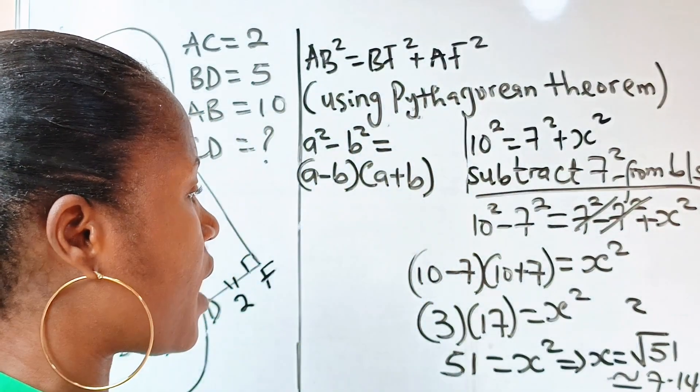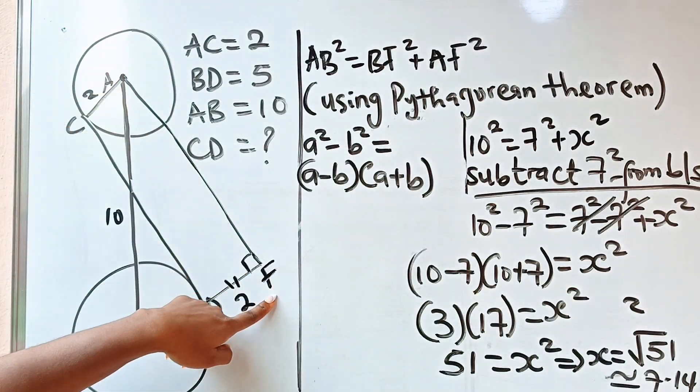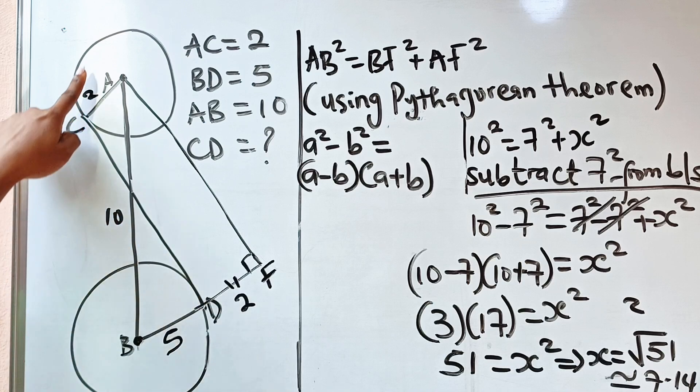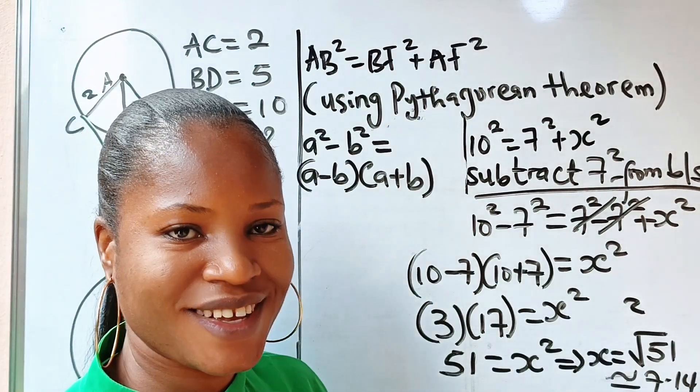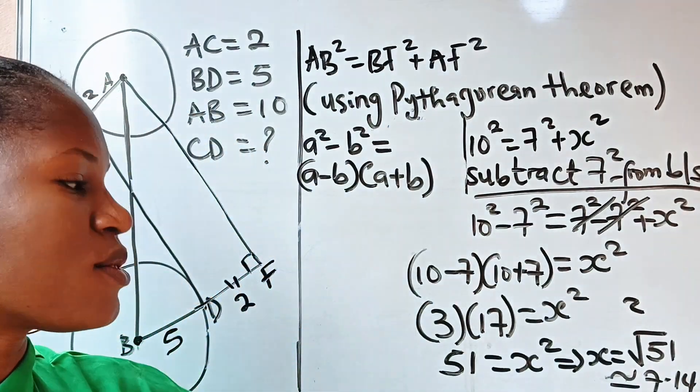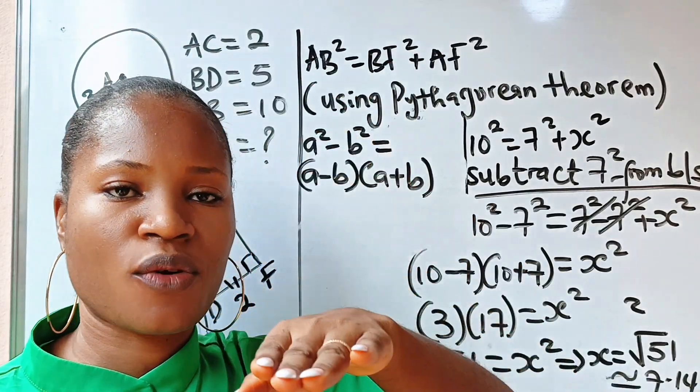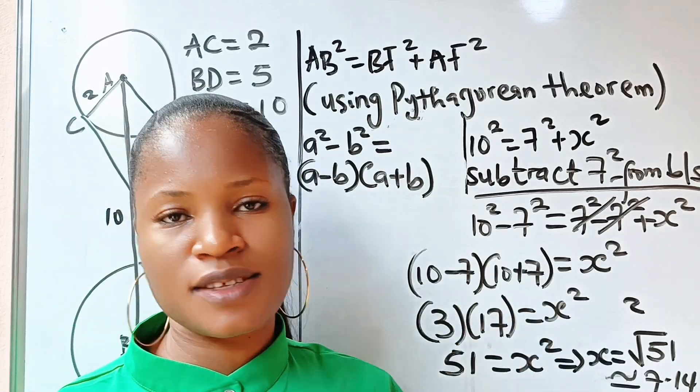And remember that our x is AF, which is equal to CD, which is what we are looking for. So it simply means that length CD is equal to 7.14 units. Okay, then tune in for the next, my second topic, okay, because this video is already too long. Thanks so much for watching. See you in my next video.